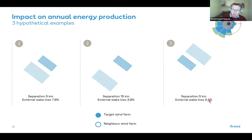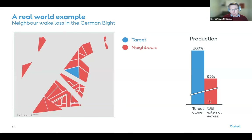In a real-world calculation from a recent German auction, the target wind farm surrounded by future neighbor areas suffered a 17 percent production loss relative to a hypothetical case where it existed alone — quite significant.